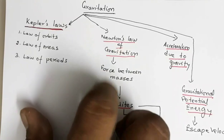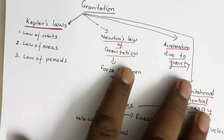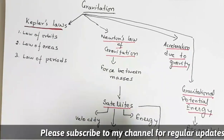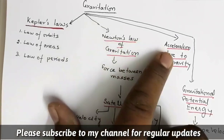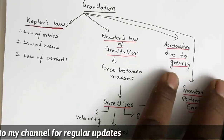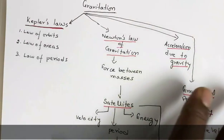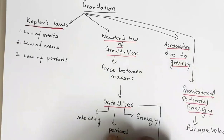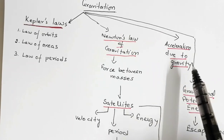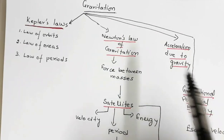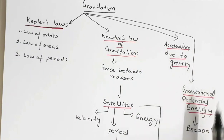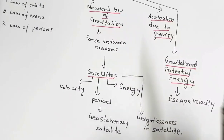Then we'll be studying Newton's law of gravitation, from which we'll calculate the force between masses. In case we have more than two masses, we'll look at how to calculate the net force. Then we'll be studying acceleration due to gravity — the acceleration produced due to the gravitational force of Earth, or in other planets also. We'll also study how this acceleration due to gravity varies with height, depth, latitude, and velocity of the planet.